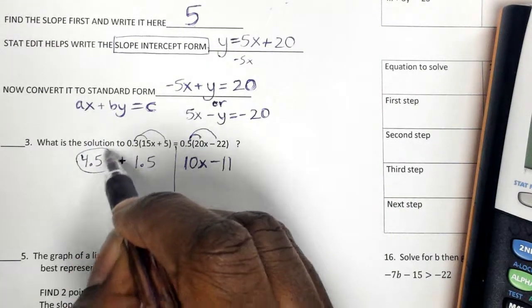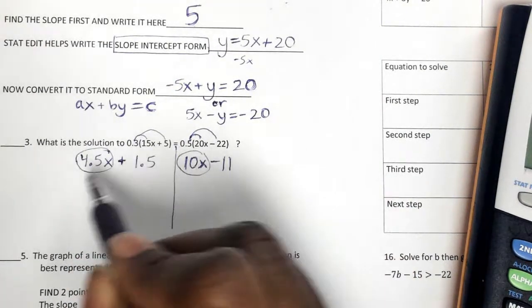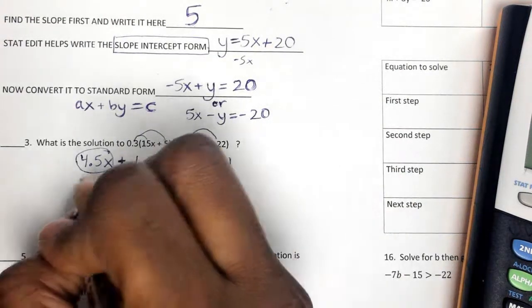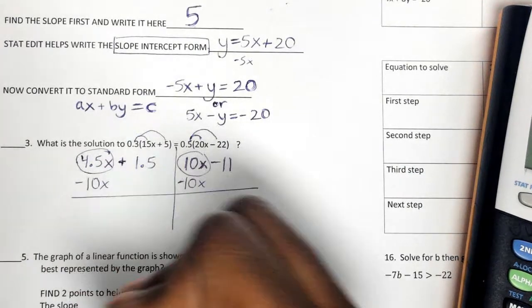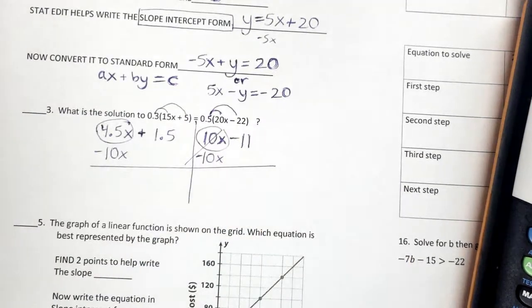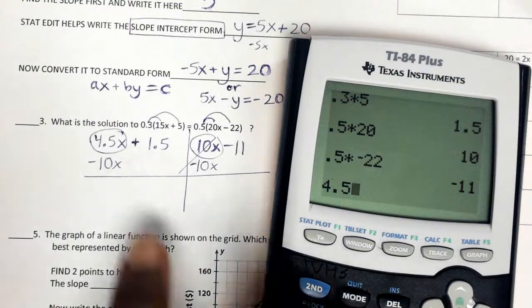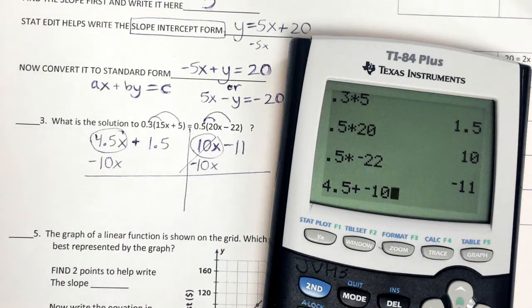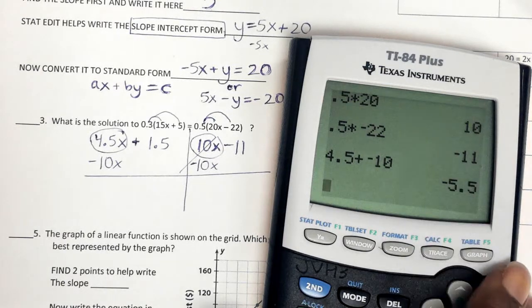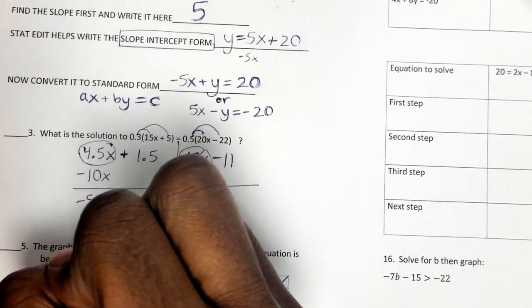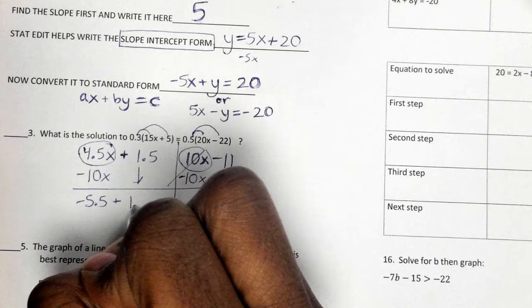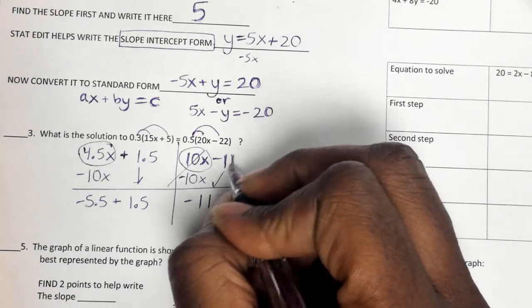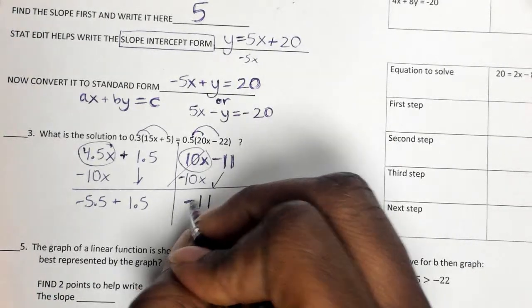I see like terms here, like terms here. They're on opposite sides of the equals, so I've got to do the opposite to move it over here. So now I can combine it. So 4.5 plus negative 10. So that gives me negative 5.5. Bring down that. Bring down that. That was not 11. That was a negative 11.